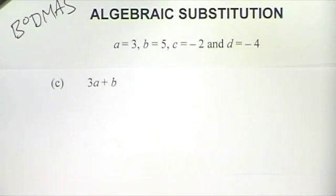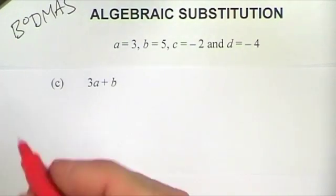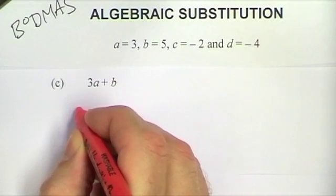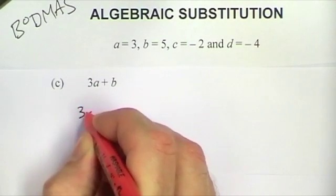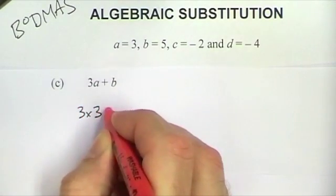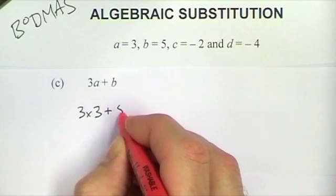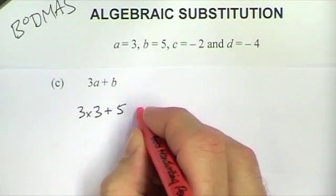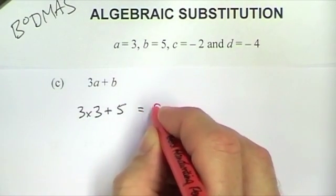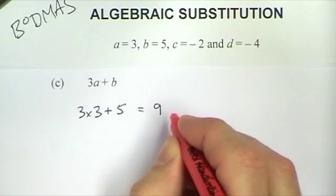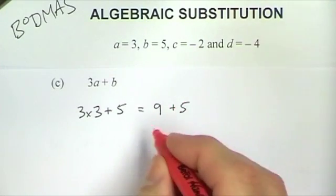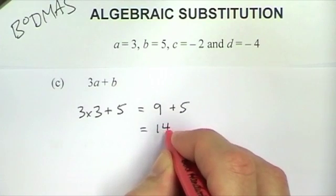The next expression is 3a plus b. That means 3 times a, which in this case is 3 times 3, and then the plus and b is 5. I must do the multiplication first. So 3 times 3 is 9, and then plus 5. And 9 plus 5 is 14.